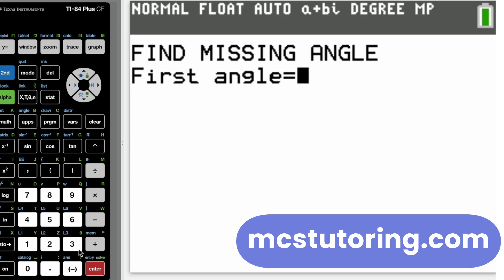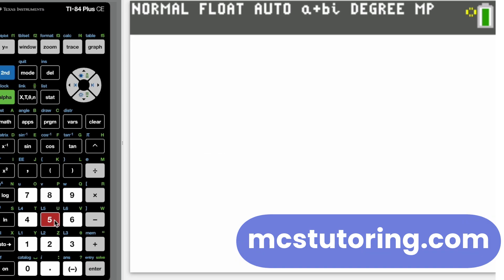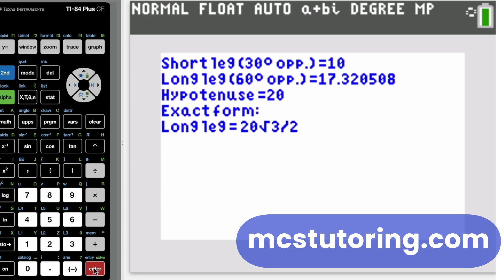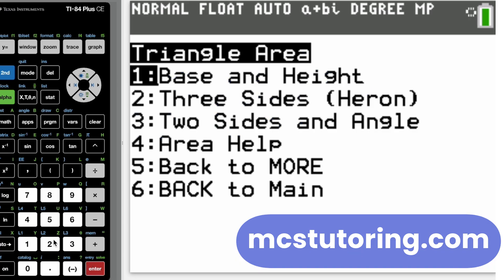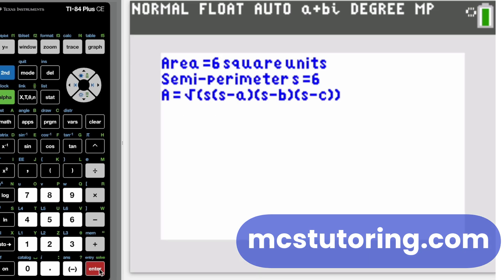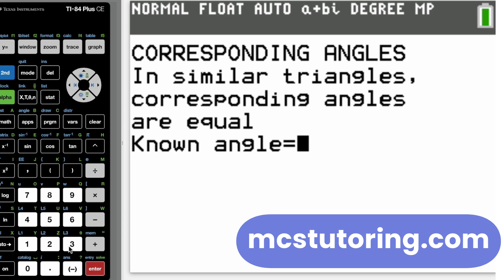From calculating missing angles to mastering special right triangles like 30-60-90 and 45-45-90, you'll get accurate results every time. Easily compute trig ratios, calculate area using multiple methods, even Heron's formula, and work with similar triangles and perimeters.